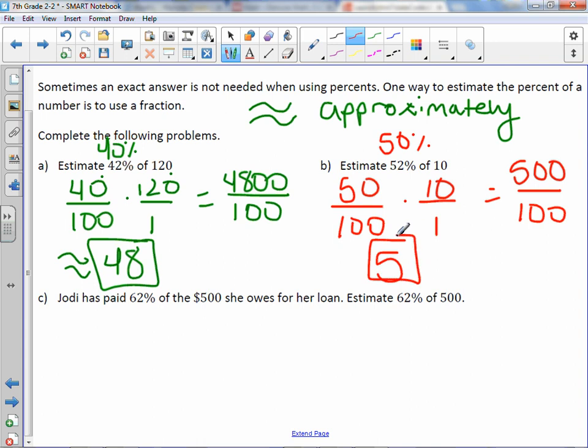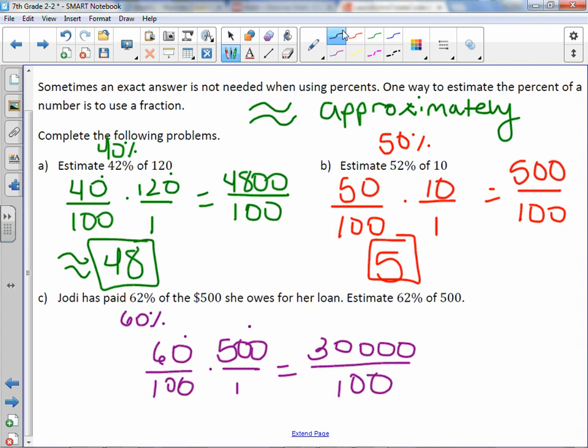Letter C, Jody has paid 62% of the $500 she owes for her loan. Estimate 62% of 500. 62% is approximately 60%, so 60 over 100% times the $500 total. 6 times 5 is 30, and add 1, 2, 3 zeros over 100. Now remember, shortcut, we can cancel off any zeros they both have in common, which leaves us with 300. And these are all approximate, these are estimations.